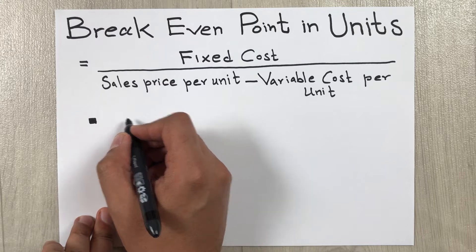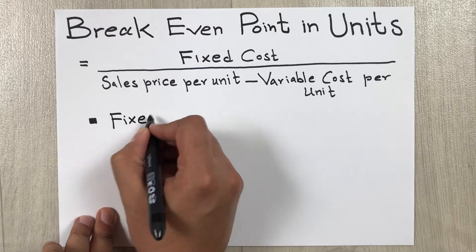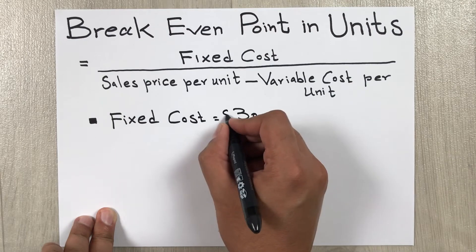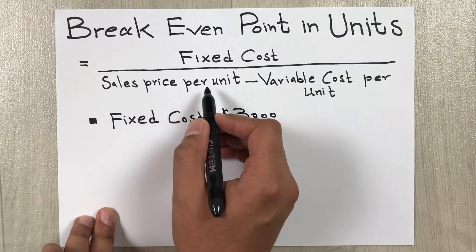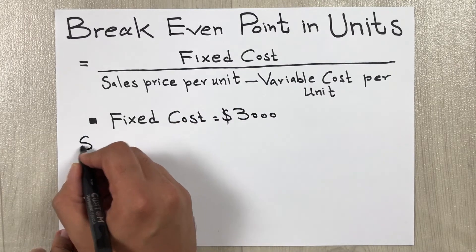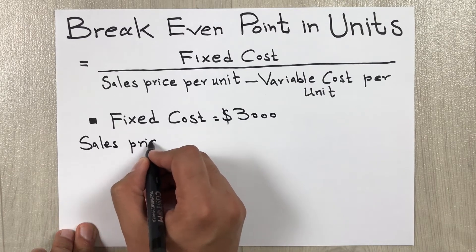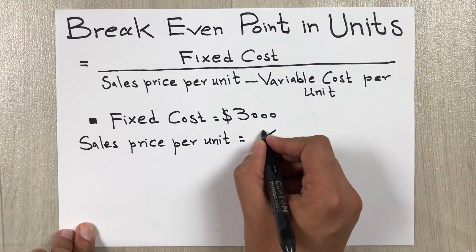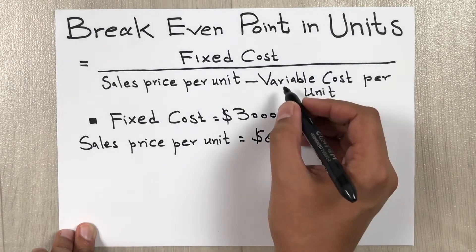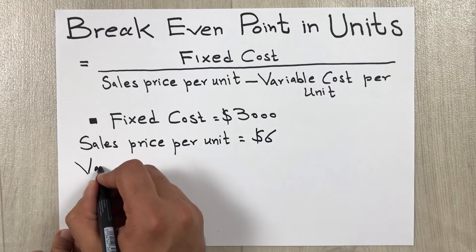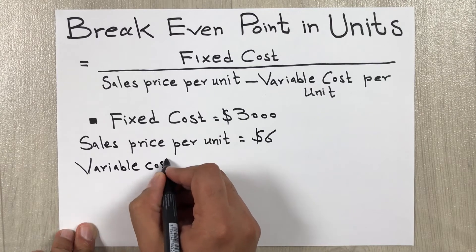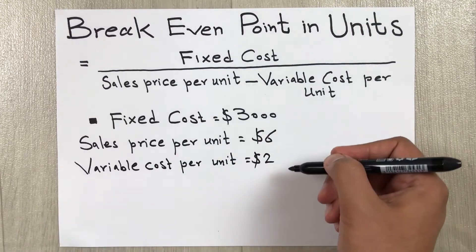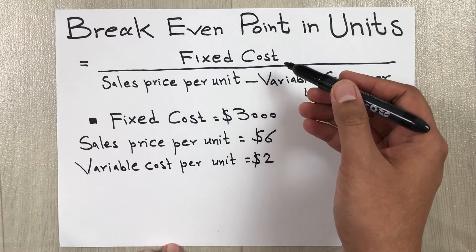Now let's say our fixed cost is three thousand dollars, our sales price per unit is six dollars, and our variable cost per unit is two dollars. Now that we have our values, we will put them into the formula to get our answer.